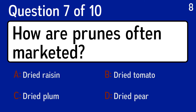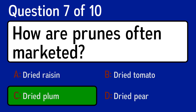Question 7: how are prunes often marketed? The correct answer is C, dried plum.